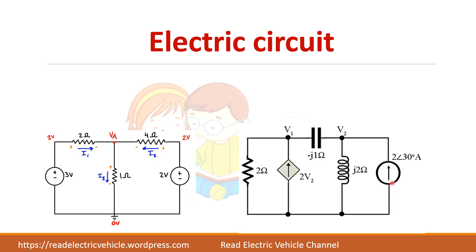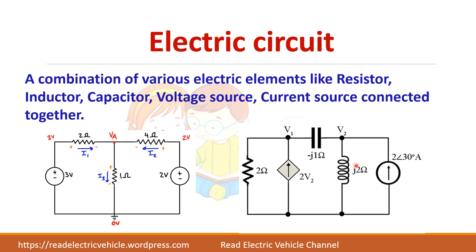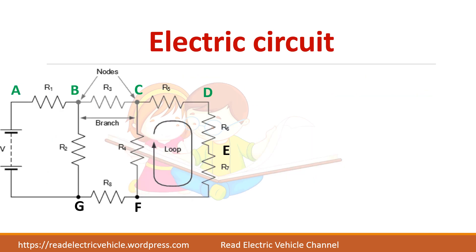This arrow represents a current source — this is an independent current source and this is a dependent current source. An electric circuit is a combination of various elements connected together — it can be a resistor, capacitor, inductor, or any circuit element which are connected together to form an electric circuit.